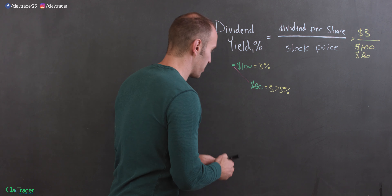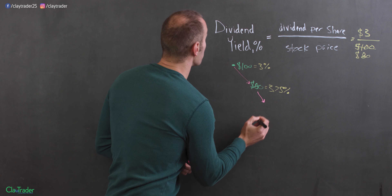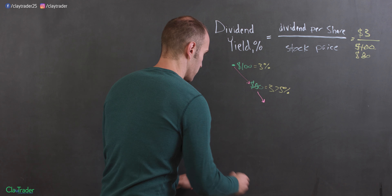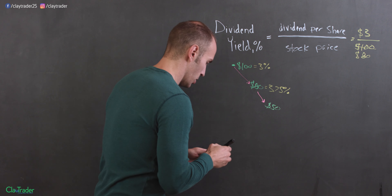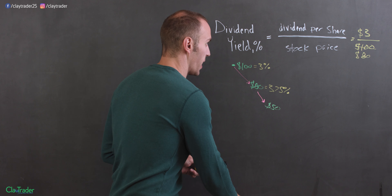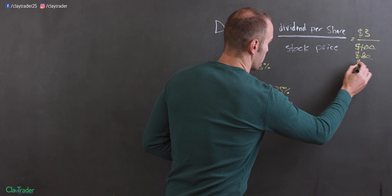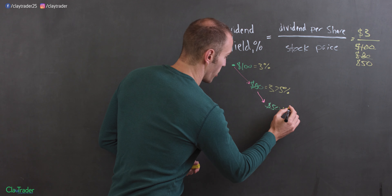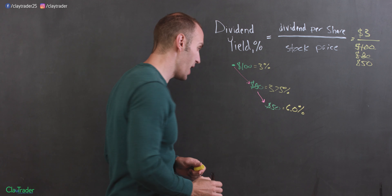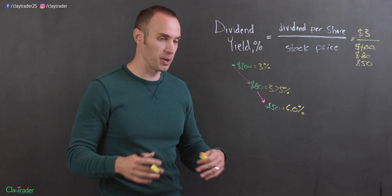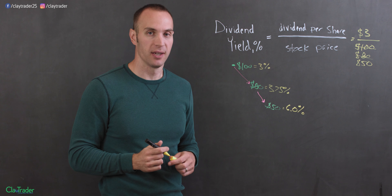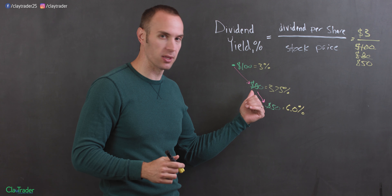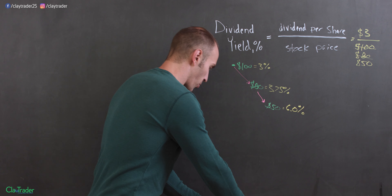Let's keep going. Life and business happens, and now all of a sudden their stock price is at $50. So we do the math on that, and now we're at a 6% dividend yield. 6%? This company must be doing great, they're paying a 6% dividend? Wait a second — how did it get to 6%? Well, the stock price just dropped even more.